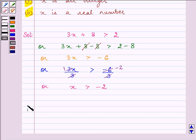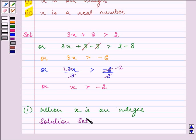So for the first part when x is an integer, the solution set consists of all the values of x which makes the statement true, and they are minus 1, 0, 1, 2, 3 and so on.